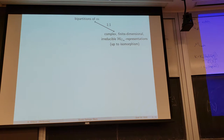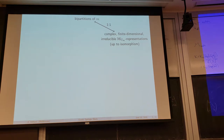One solution would be to just take nilpotent elements inside the Lie algebra of type C. This works — it gives you some sort of Springer correspondence — but it involves the component group, so there's a little bit more data that you have to introduce. It doesn't give you an explicit or concrete bijection between orbits and these irreducible representations. So you have to do something slightly more complicated if you really want to get a bijection.